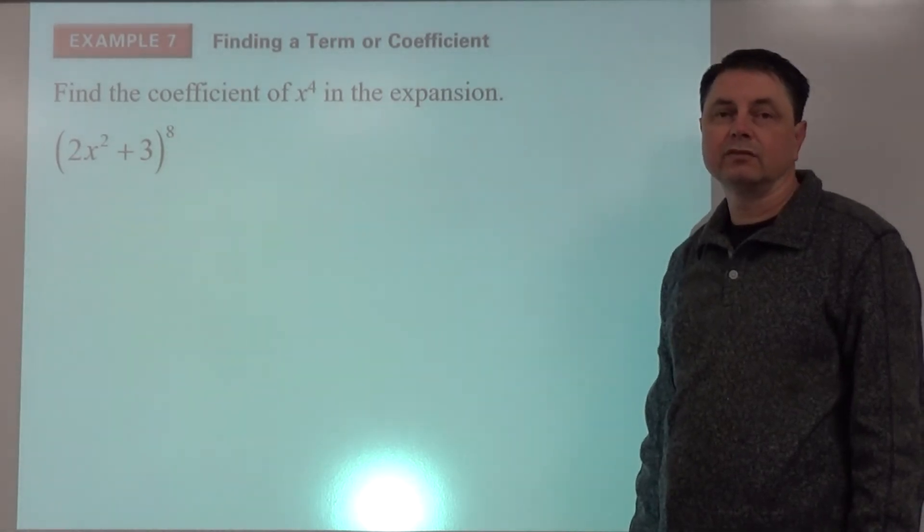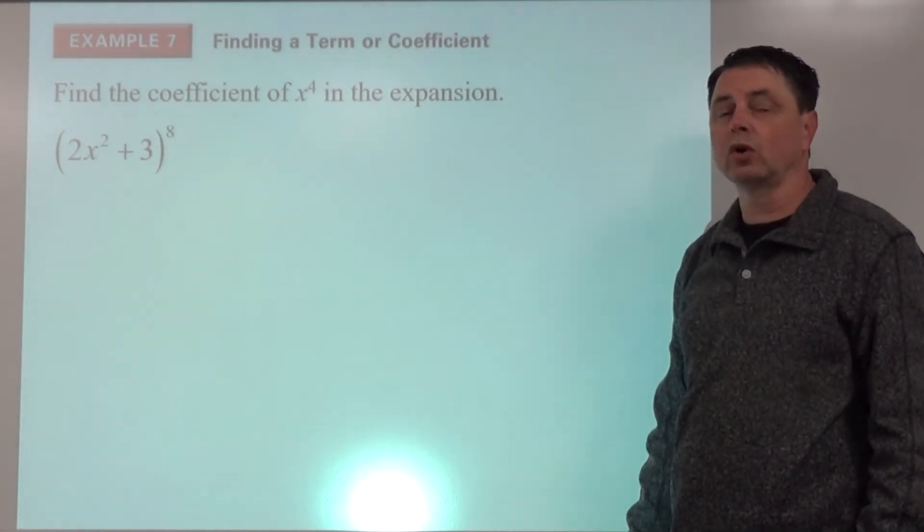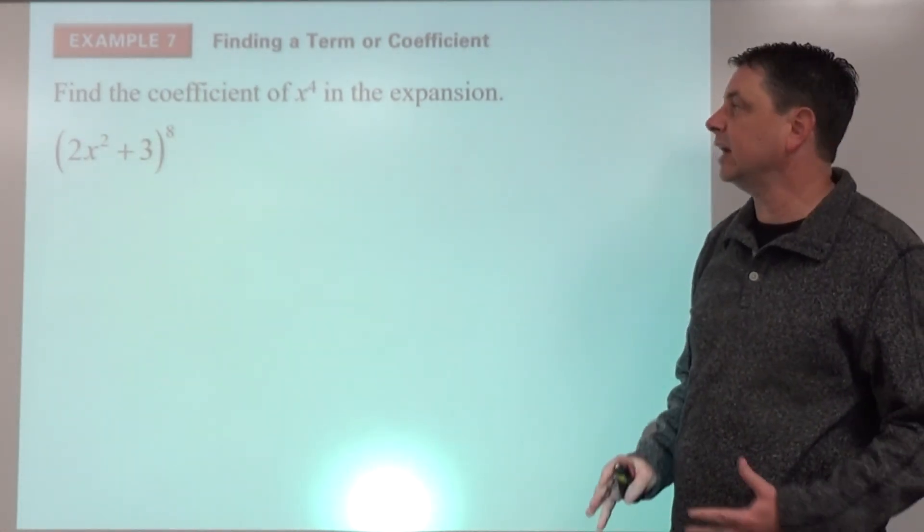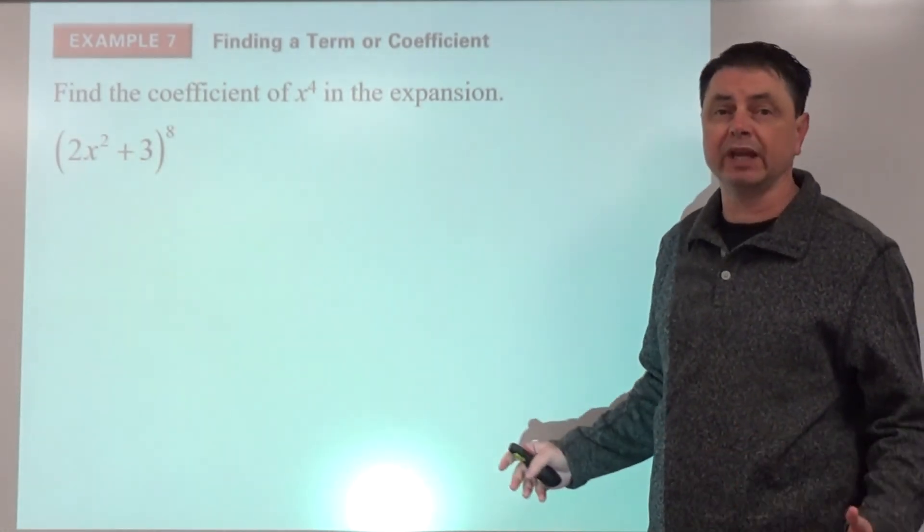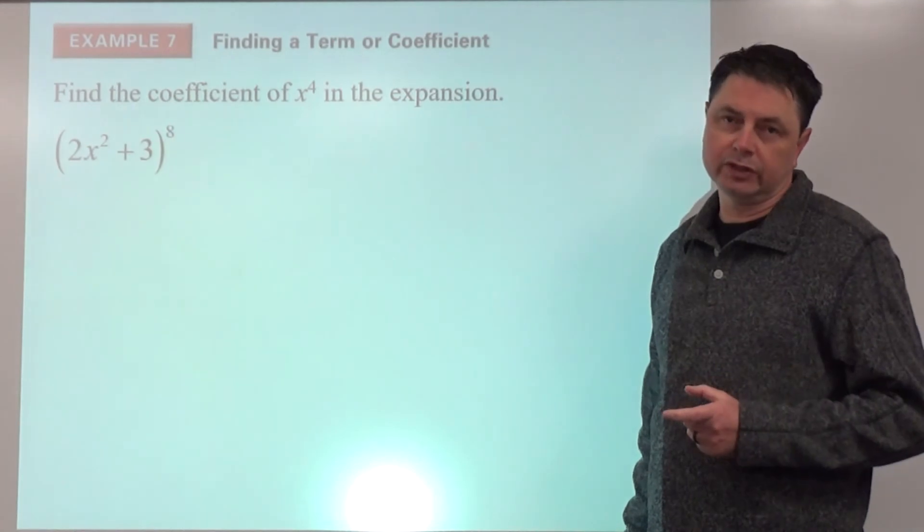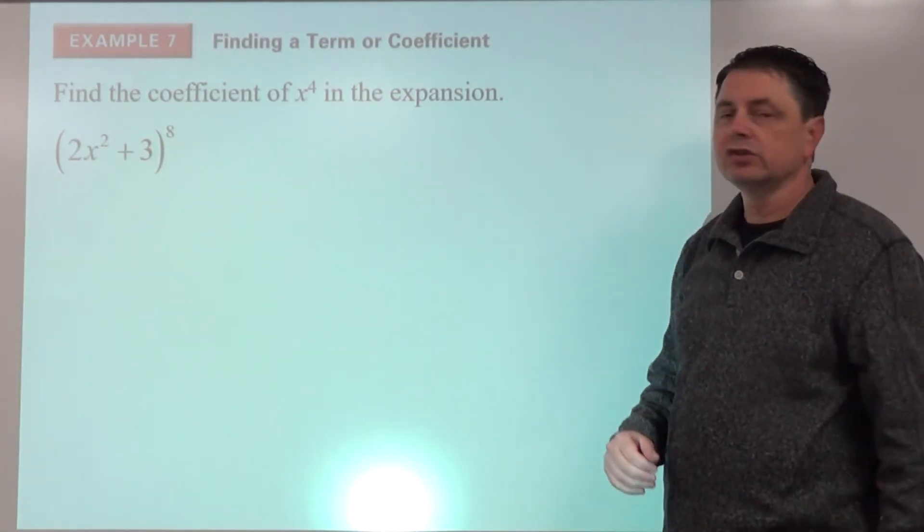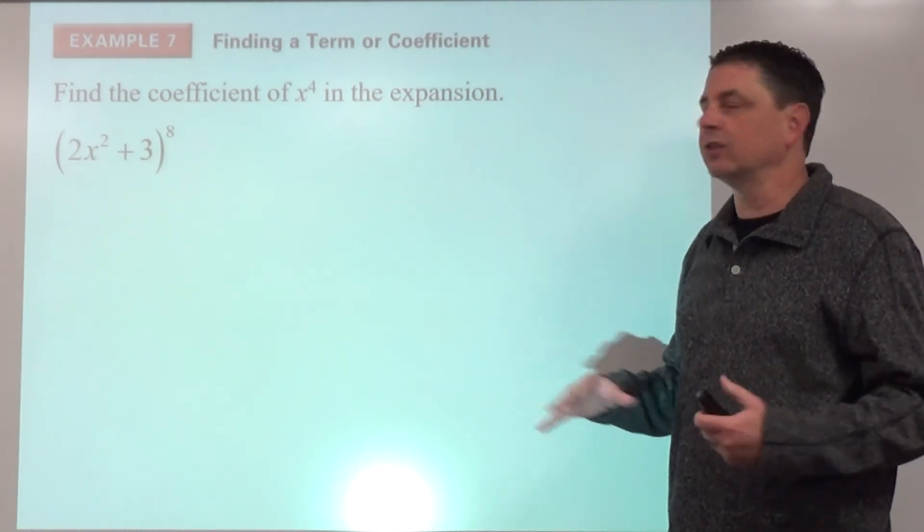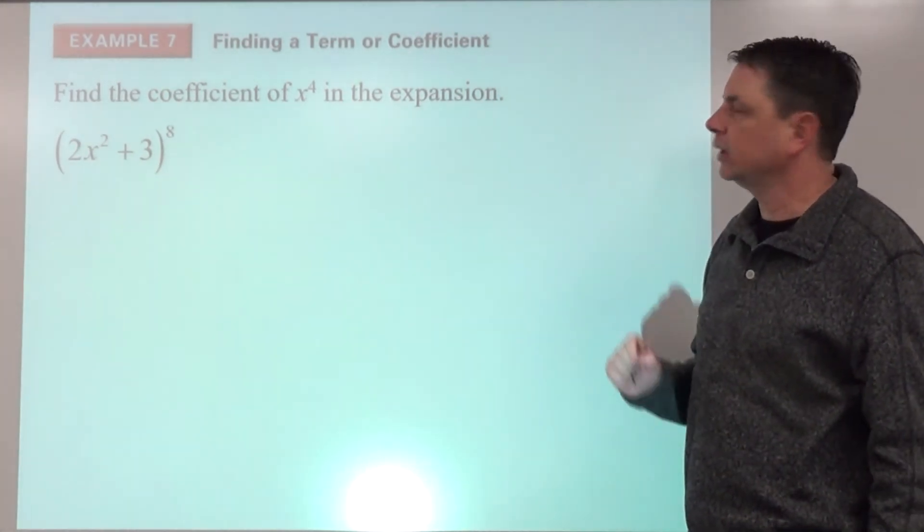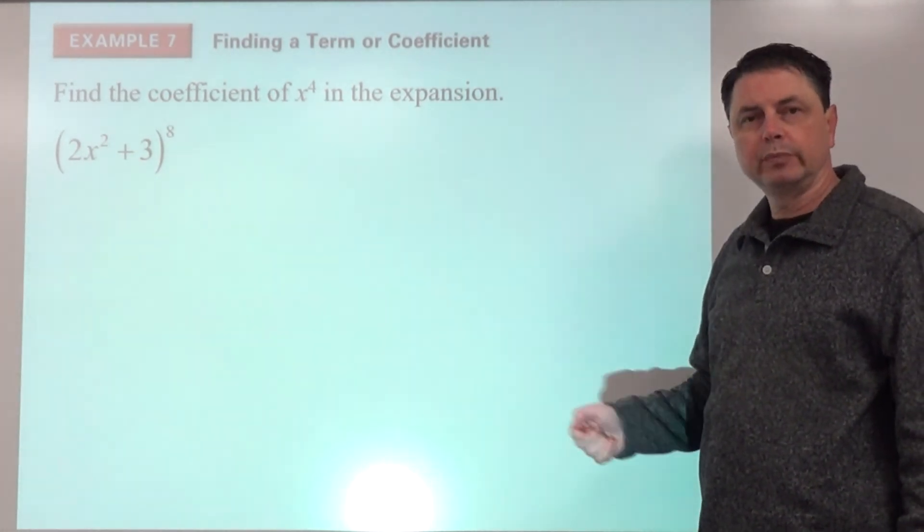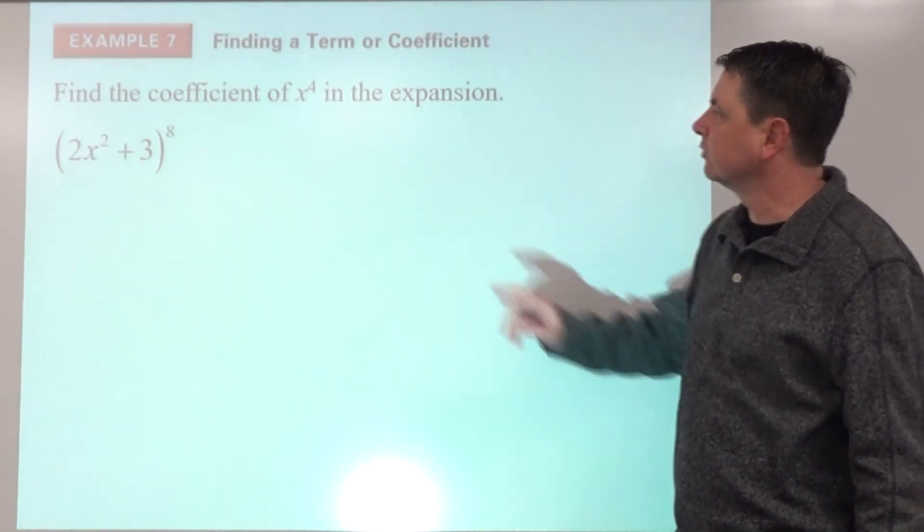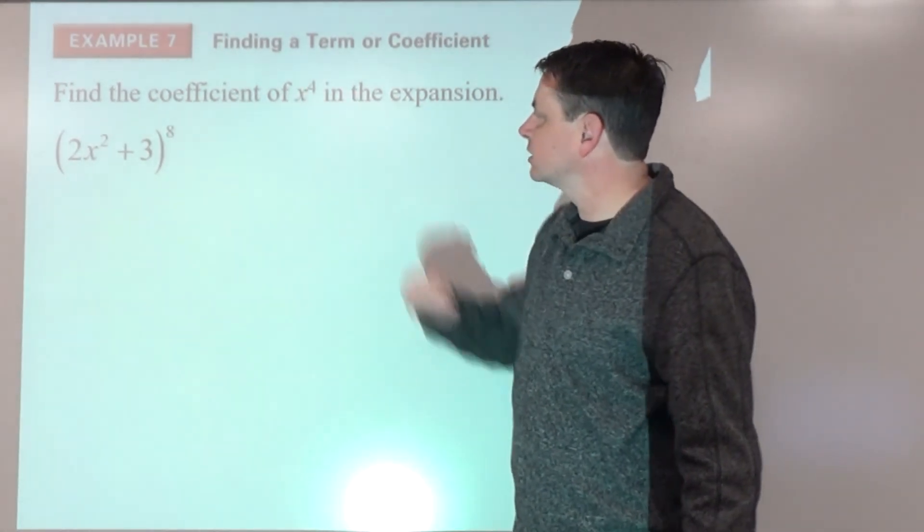Example 7, finding a coefficient or a term. So sometimes we may not want the entire expansion, just one of the terms or the coefficient of that term. So we don't have to expand the whole thing out and just look for that. So we can kind of be aware of what it is we're looking for. We're going to try to find the coefficient of x to the fourth.